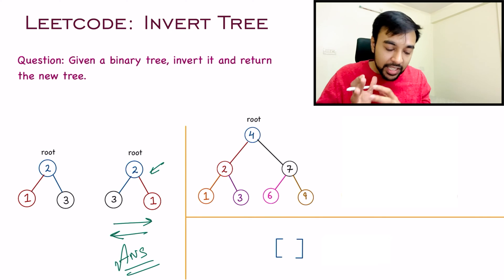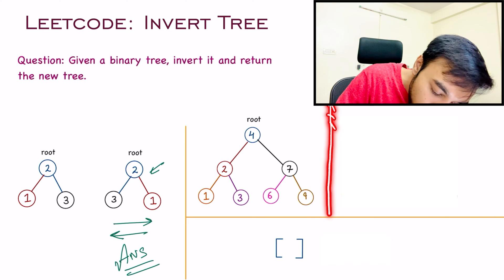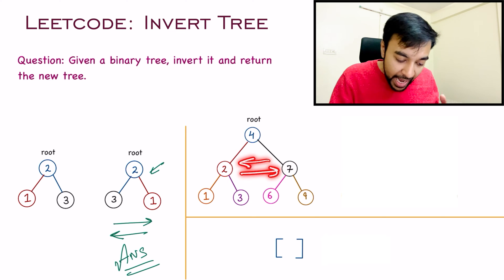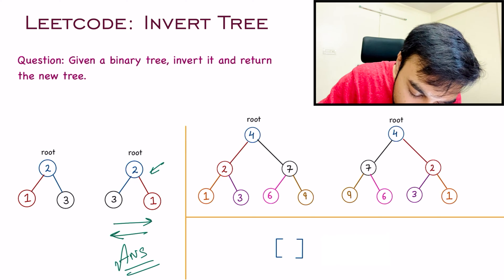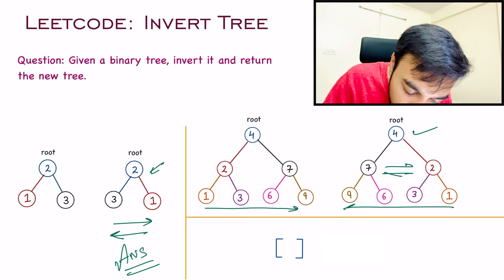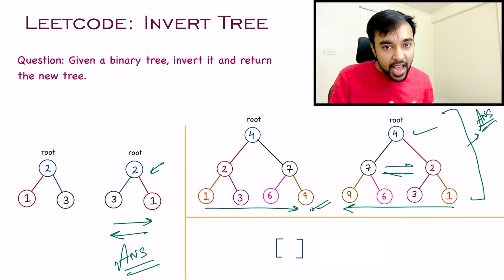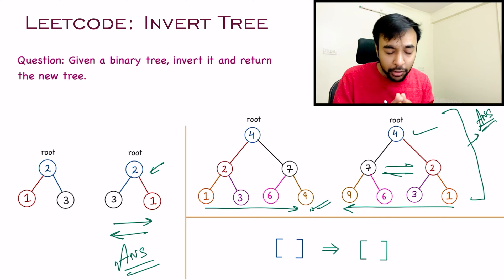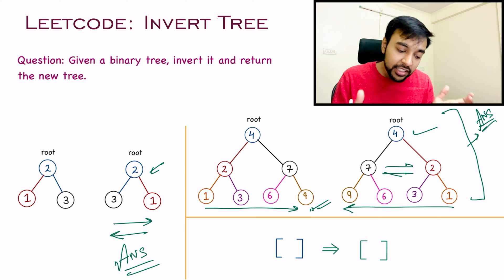Let us look at one more test case. You can see that your tree has expanded a bit, and once again to invert it you can assume there is a mirror and look at the reflection. Both of the second-level nodes will get flipped and all of the bottom-level nodes will also get flipped completely. Node 4 remains at its current place, node 7 and node 2 have swapped, and all nodes at the bottom level are swapped — for example, 9 was at the extreme right and has come to the extreme left. For the edge case, if you have a null node, you will return null because you cannot invert a null tree.